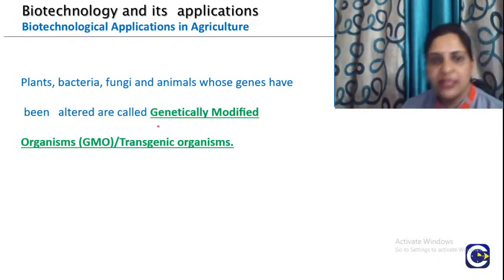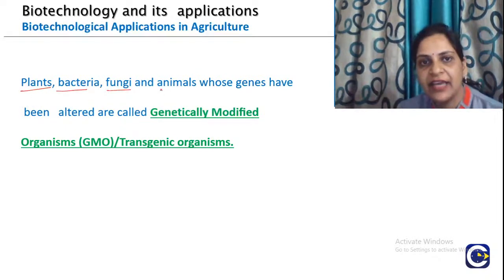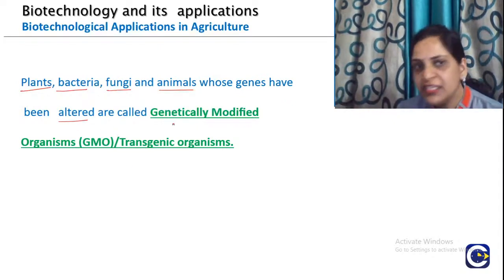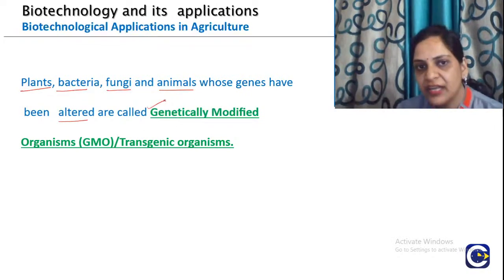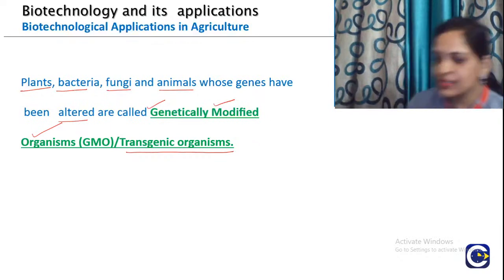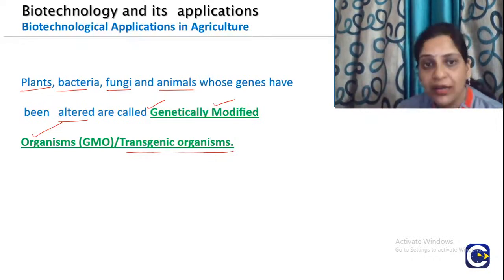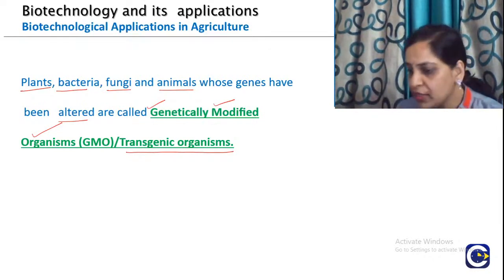Here come the genetically modified organisms — plants, bacteria, fungi and animals whose genes have been altered. The alteration in the genome of these organisms means they are known as genetically modified organisms or transgenic organisms. What are transgenes and what are genetically modified organisms? We are going in detail in minutes.